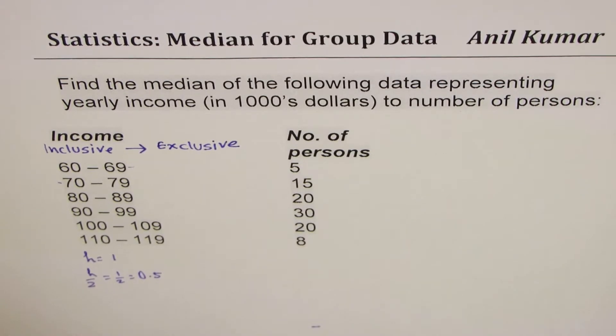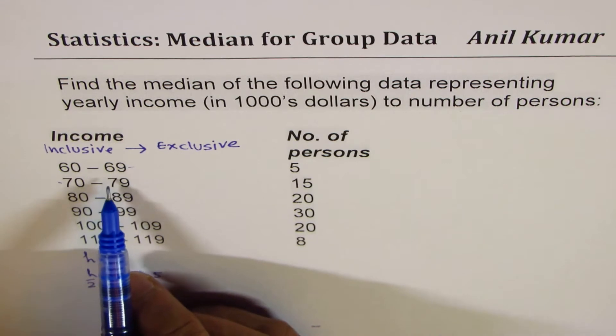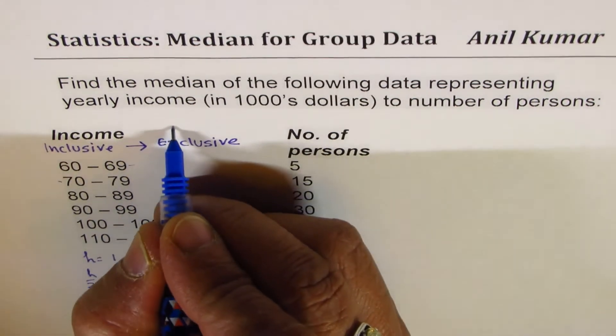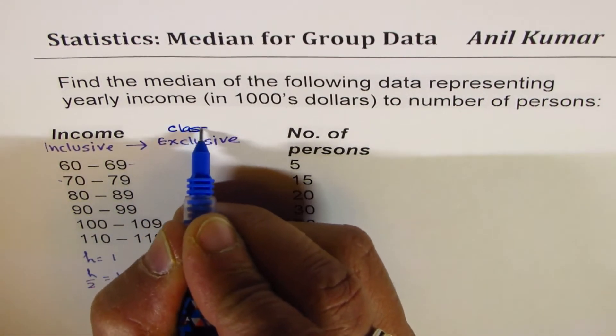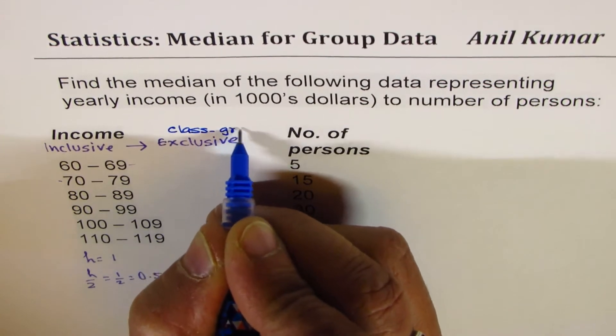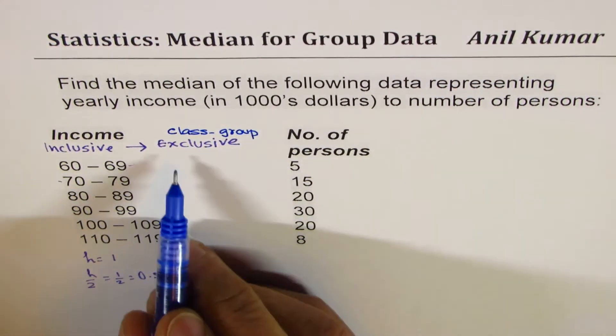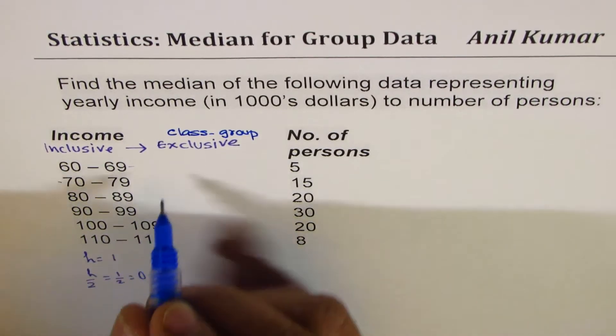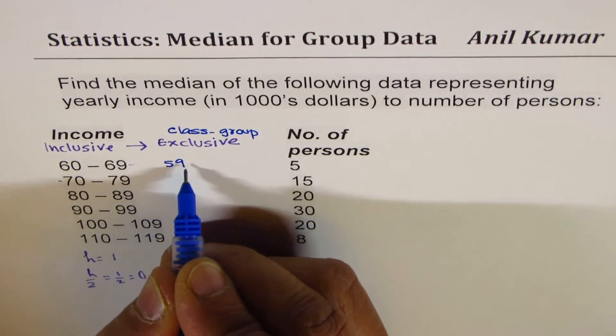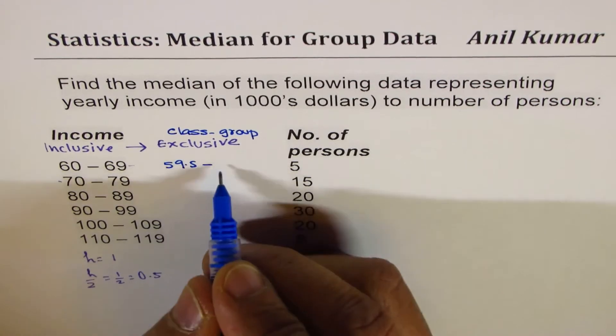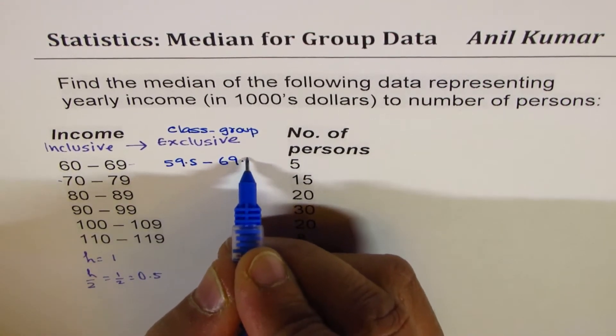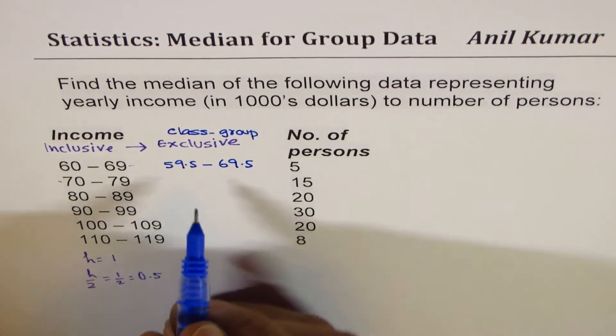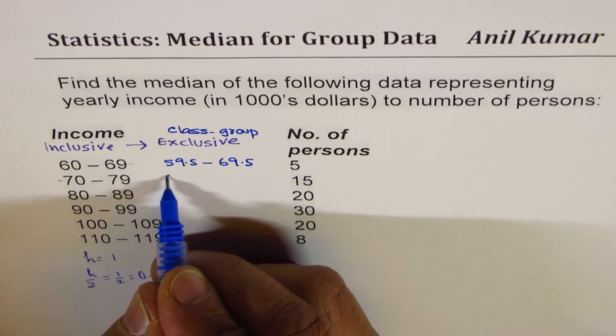That helps us to form the class group. Whenever you have a class group, it should be given in exclusive form. In this case, we could write this as 59.5 to 69.5, and similarly we'll continue.